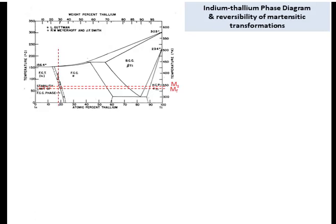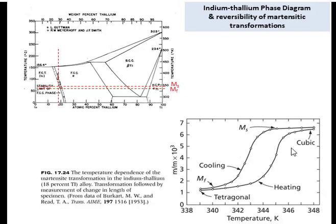On cooling a single crystal, an interface first appears at one end of the specimen and with continued cooling moves down throughout the entire length of the crystal. Because of the dimensional changes accompanying the reaction, its progress can be easily followed with the aid of a simple dilatometer that measures the specimen length as a function of temperature. A typical set of this kind of data is shown here.